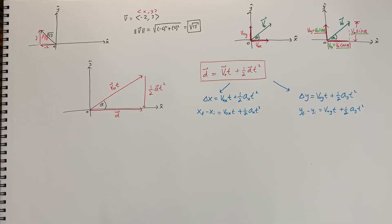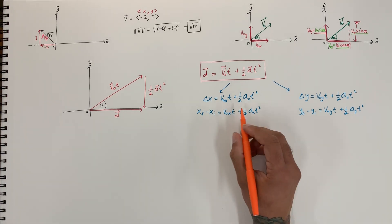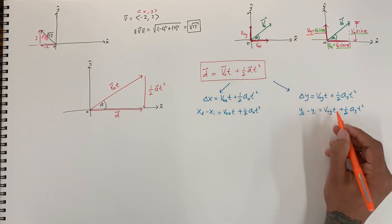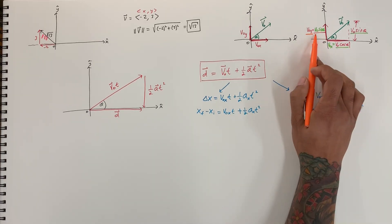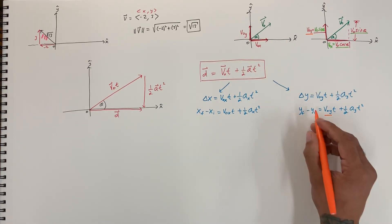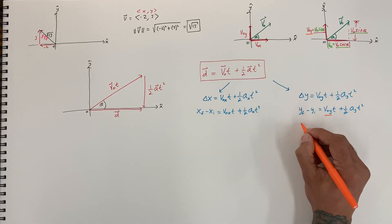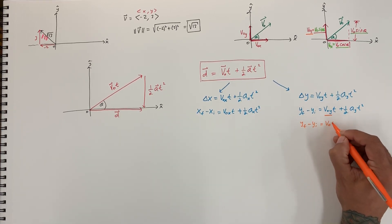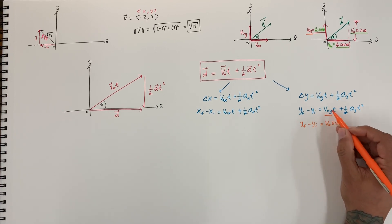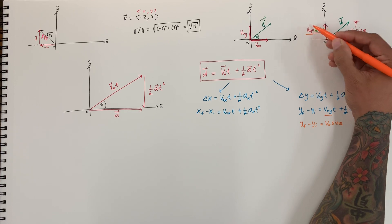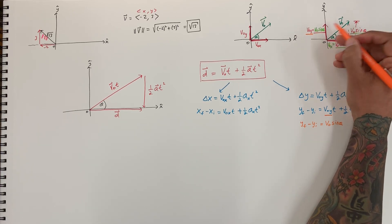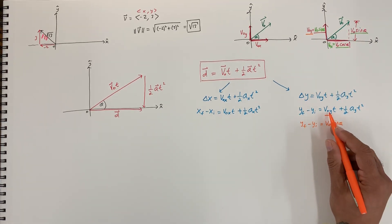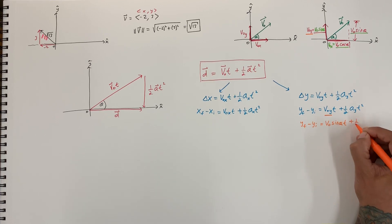So we need to look at what we already know from breaking things up into vectors. The displacement in x means x final minus x initial equals v naught cosine theta times t, plus one half a_x t squared. On the y side, displacement is final minus initial, which is x final minus x initial equals v naught y times t, plus one half a_y t squared. We can substitute, since v naught y is actually v naught sine theta. Let's rewrite this: y final minus y initial equals v naught sine theta times t, plus one half a_y t squared, because the velocity in the y direction is the initial velocity times sine of the launch angle.